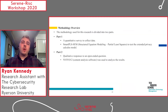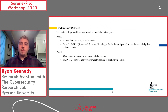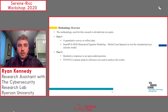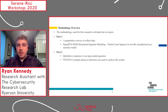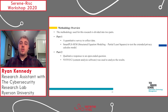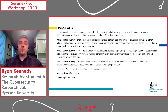In terms of our method and results, we have two parts. Part one uses a quantitative survey to collect data, and structural equation modeling — specifically SmartPLS — is used for analysis. Within part two, we have qualitative responses to an open-ended question, and NVivo 12 and a content analysis are used for that.